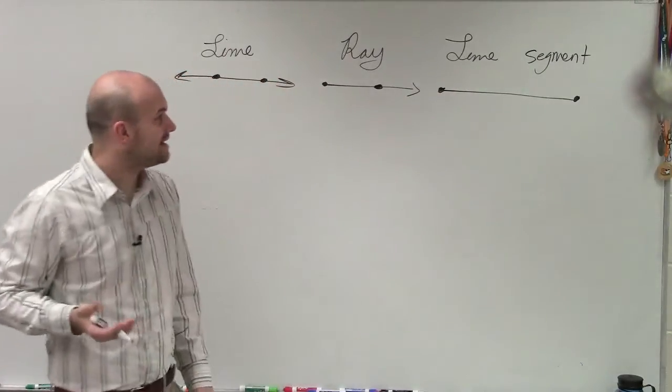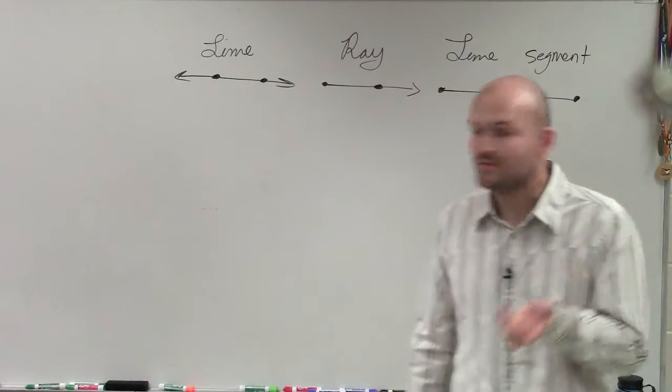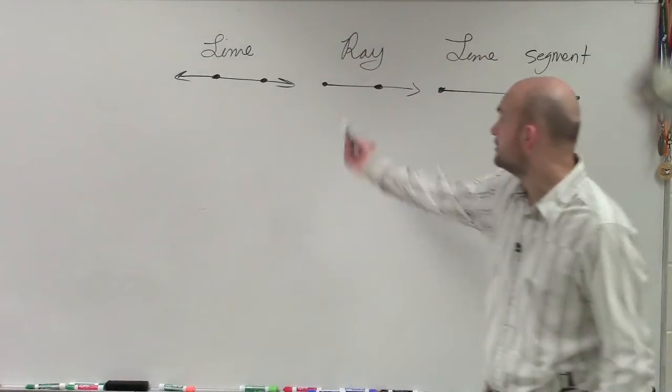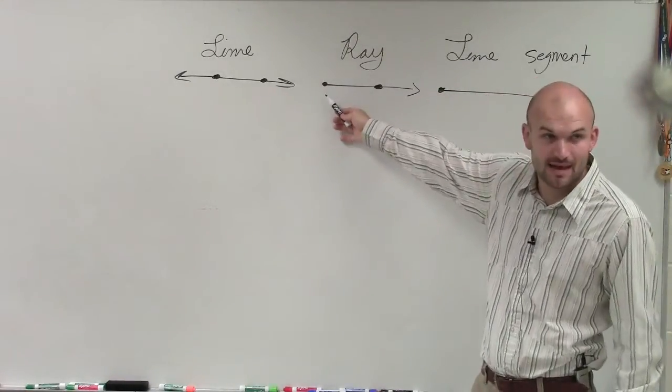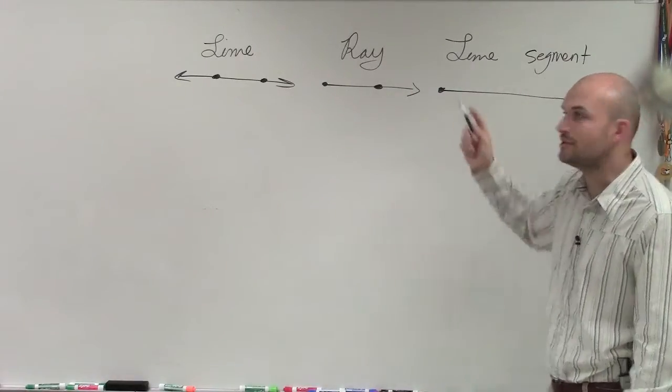Now, the thing with the ray and a line segment is you are always going to be given an endpoint because they have to contain that endpoint, right? This ray, you know you're going to be given this endpoint because that's the point. In the line segment, you always are going to have two endpoints.